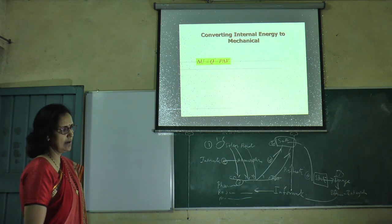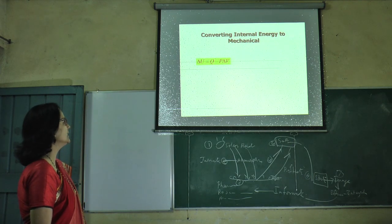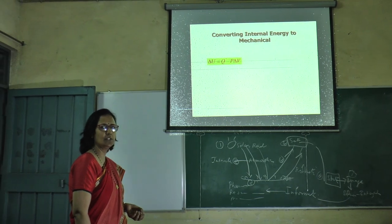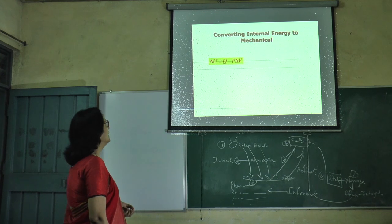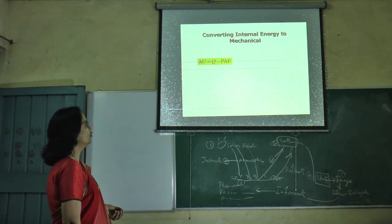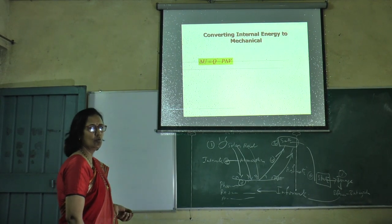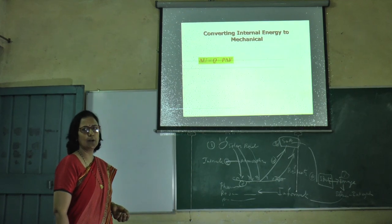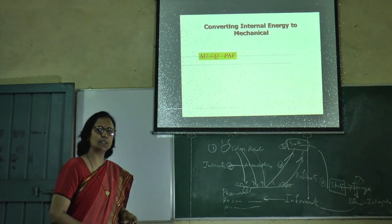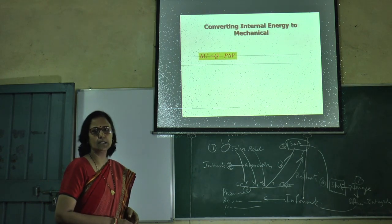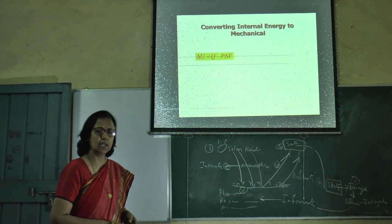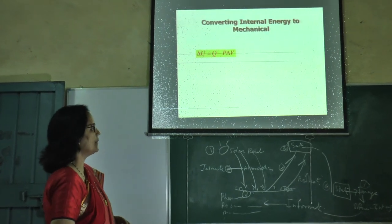According to law of conservation of energy, change in internal energy is shown by delta U. Q is internal energy which is denoted by Q minus P delta V. Q is amount of energy given to system and P delta V is work done by system. Two types of work is done: work done on the system by surrounding and work done by system on surrounding.